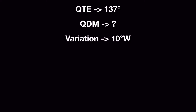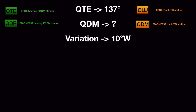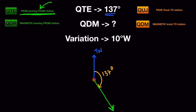Let's do a worked example. We're given a QTE of 137 degrees and we need to find the QDM. Variation is given as 10 degrees West. To solve any question in radio navigation, I recommend starting by drawing a diagram. QTE is the true bearing from the station, so let's place the station and draw true north. QTE of 137 degrees means we measure 137 degrees clockwise from true north — a bit more than 90 degrees — and the aircraft is somewhere on that line.